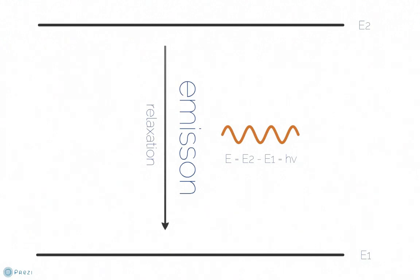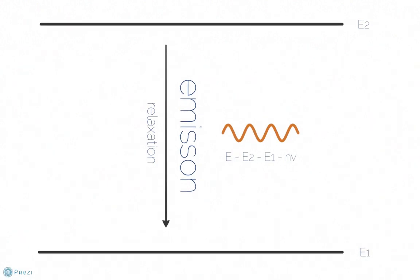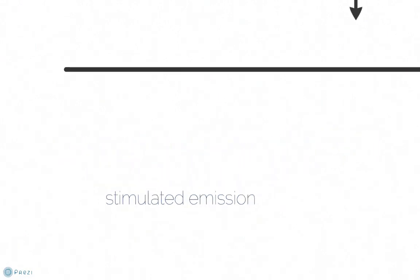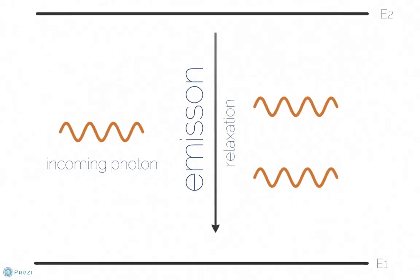Spontaneous emission emits a photon of characteristic energy that is the difference of the two levels. The third process occurring within this active medium is stimulated emission, whereby an incoming photon stimulates an electron from the high energy state to a lower energy state, emitting a coherent photon. As you can see, stimulated emission results in the amplification required.